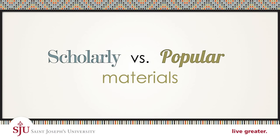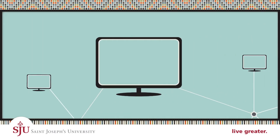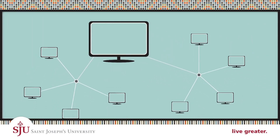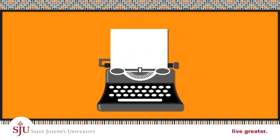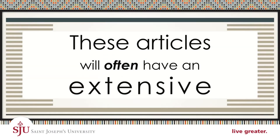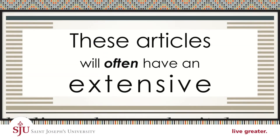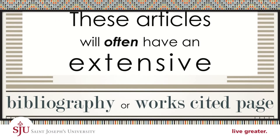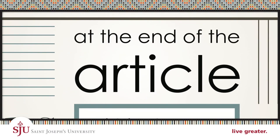Scholarly versus popular: the library's databases contain both popular and scholarly articles. Scholarly articles are written by experts within a field for other experts and are narrow in scope — for example, exploring a specific population or geographic region. These articles will often have an extensive bibliography or works cited page at the end.